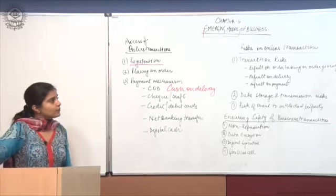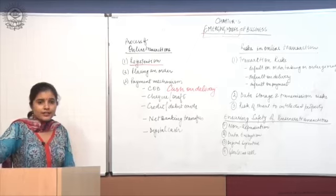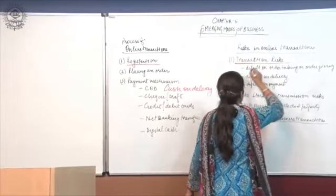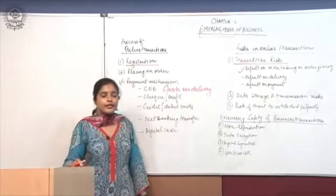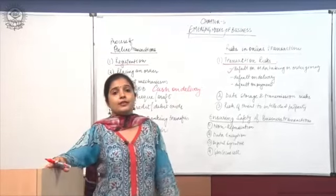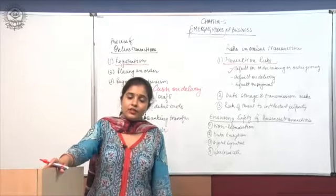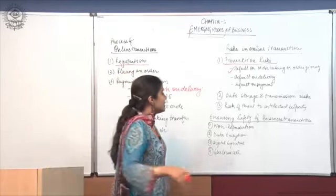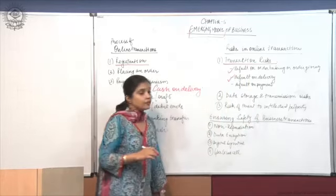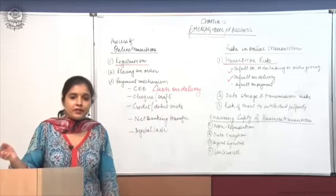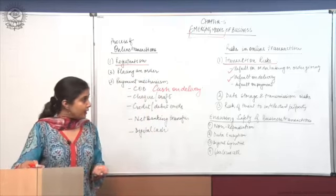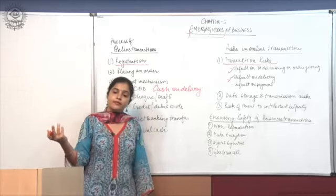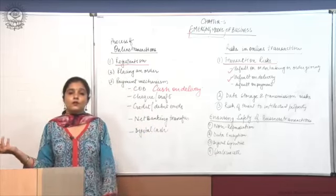Now, in continuation, I would also like to talk about the different risks that online transactions are exposed to. Number one is transactional risks. The first transactional risk is default on order taking and order giving — wherein the seller or the buyer denies having received or having placed the order. This risk is always there. Then, default on delivery — meaning either the wrong address was delivered to or the wrong product was delivered. Then default on payment — where the buyer claims to have paid and the seller claims not to have received the payment.